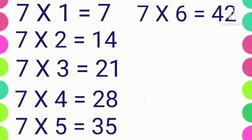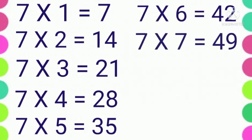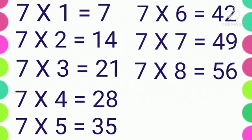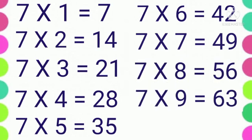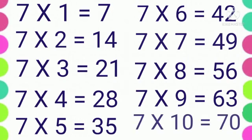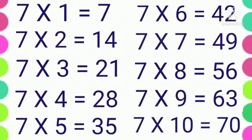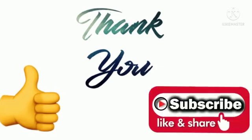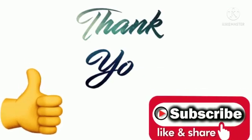Seven sixes are forty-two. Seven sevens are forty-nine. Seven eights are fifty-six. Seven nines are sixty-three. Seven tens are seventy. Thank you.